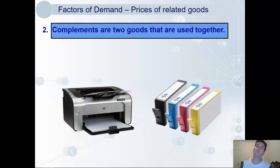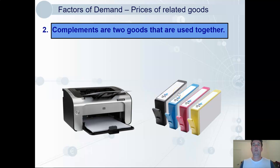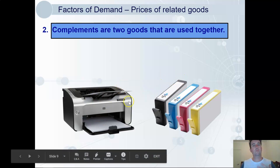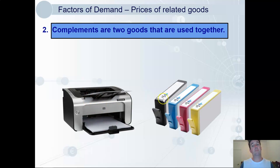There are also complements, like printers and printer ink. If the printer price comes down, due to the law of demand people will buy more printers. And if people are buying more printers, they're probably going to buy more printer ink. So the price of printers will affect the demand for printer ink.